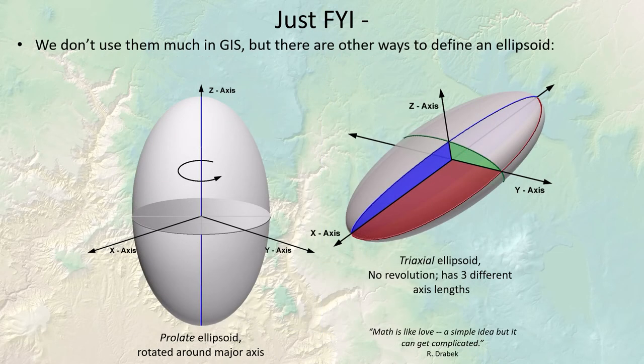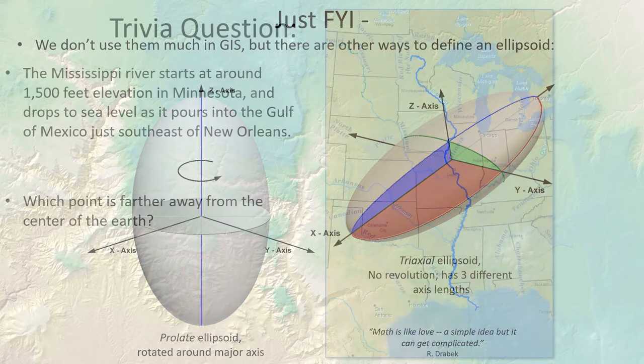This doesn't have much to do with GIS, but just so you know: a prolate ellipsoid is the same concept as an oblate ellipsoid except it's rotated around the long axis instead of the short one — it looks sort of like a football. There is also a triaxial ellipsoid, defined by three different values: a semi-minor, a semi-major, and a third. We use the oblate ellipsoid, which looks like a squashed sphere and is a good model for the planet.